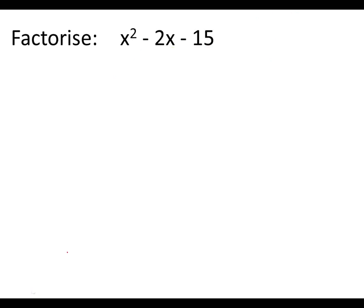Here we do another example now. The question says factorise x squared minus 2x minus 15. So again we can set the question up with our two sets of brackets and we circle the 15 at the end including the minus.